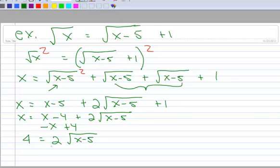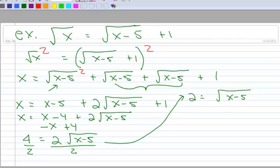And now at this point, we're going to divide both sides by 2. And while we do that, I'm going to come up here and continue my work. So I have 2 equals the square root of X minus 5. And here we have to square both sides again, because we have another radical to get rid of.